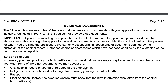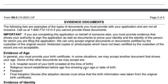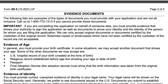On page two of this form is a list of evidence documents. Depending on what you're trying to update, if you're trying to provide evidence of age, generally you must show your birth certificate or some other document that shows your age. The Social Security Administration may accept a U.S. hospital record of your birth, religious records established before you turn age five that show your age or date of birth, a passport, or an adoption decree that shows the birth information was taken from the original birth certificate.